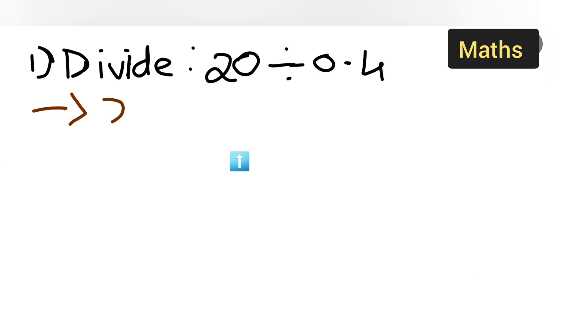This is 20 divided by 0.4, which is equal to 20 divided by 0.4. We can remove the decimal point, right. So it will be 4 upon 10.